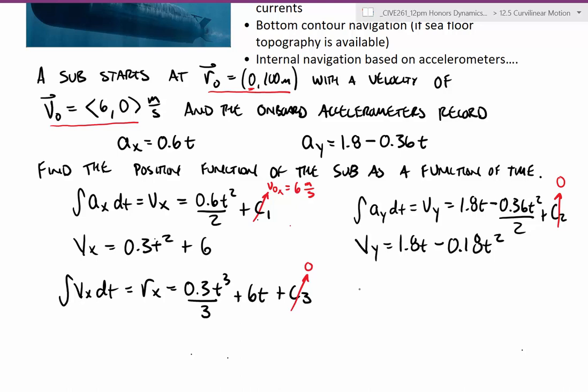And so I could do the same integral here for the y. The integral of v sub y dt is equal to 1.8t squared over 2 minus 0.18t cubed over 3 plus c4. Now the c4, taking a look at the initial y position is 100 meters, and so this here would be 100 meters.